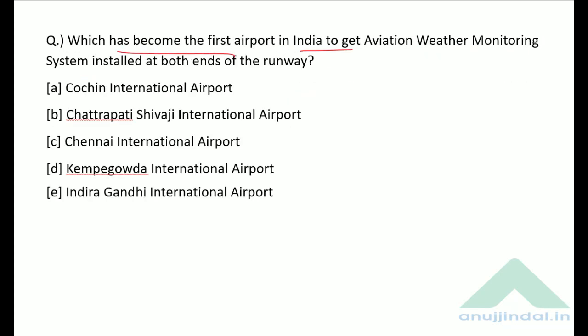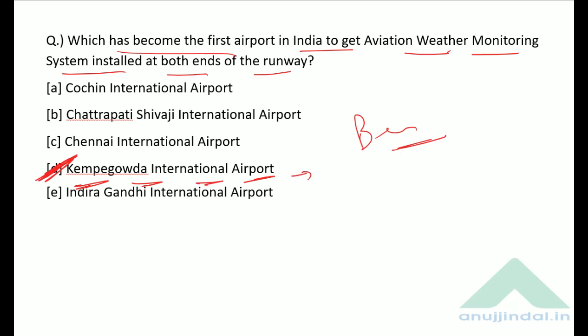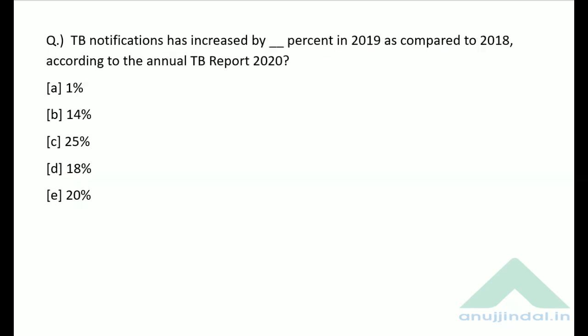Which has become the first airport in India to get an aviation weather monitoring system installed at both ends of the runway? This is Kempegowda International Airport — the Bengaluru airport — which has become the first airport in India to get this aviation weather monitoring system.